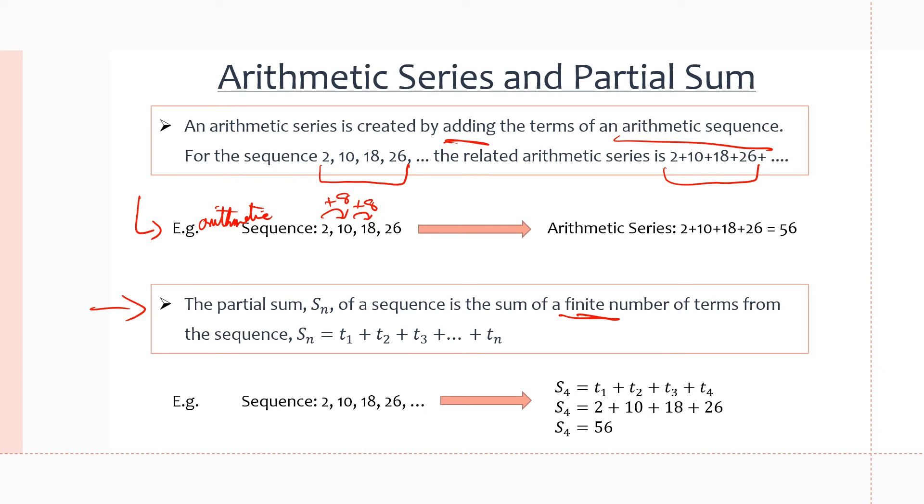And the template for partial sum is S of n equals t1 plus t2, term 1 plus term 2 plus term 3 plus term 4 and so on until term n. So if we take a look at our example down here, if we have a sequence of 2, 10, 18, 26, and so on, the same arithmetic sequence we had in the last example up here.